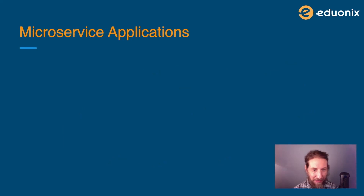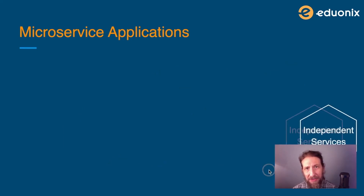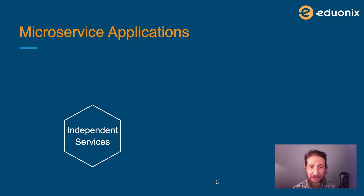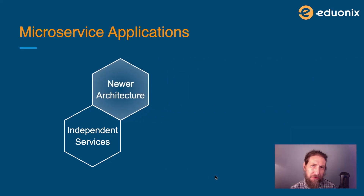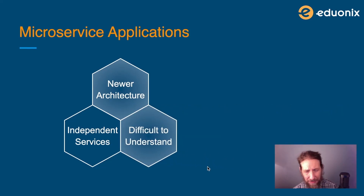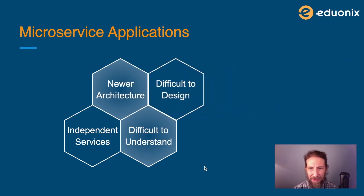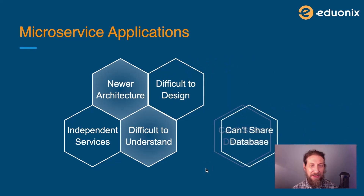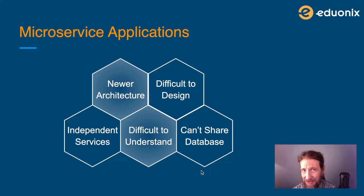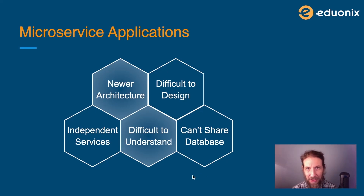Microservice applications, on the other hand, are built out of independent services. This architecture was adopted around 2011, and it does make it more difficult to understand what's going on in your application and more difficult to design. That's because they do not share databases, logic, or middleware services — they are completely separate applications at the microservice level that work together to form the overall application.